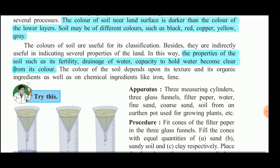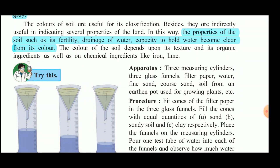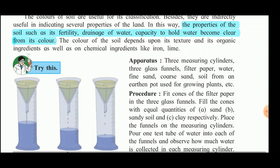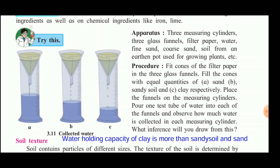With the help of this experiment, we will see how water-holding capacity differs for different types of soil. Take three measuring cylinders, three glass funnels, filter paper, water, fine sand, coarse sand, and soil from an earthen pot used for growing plants.